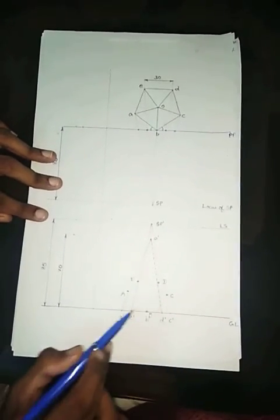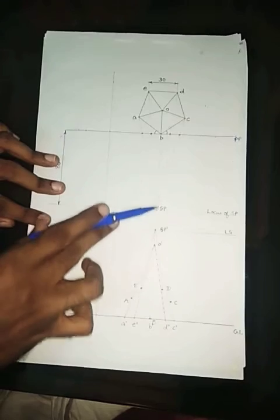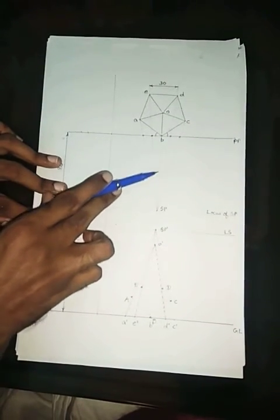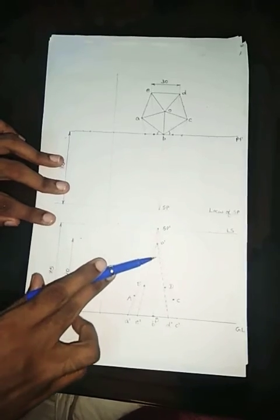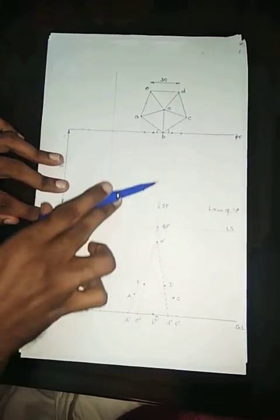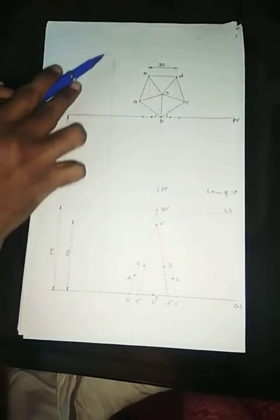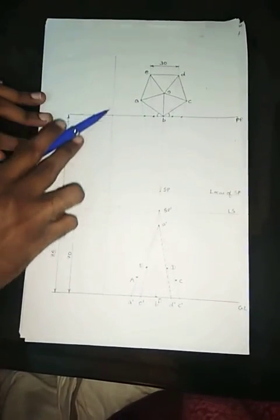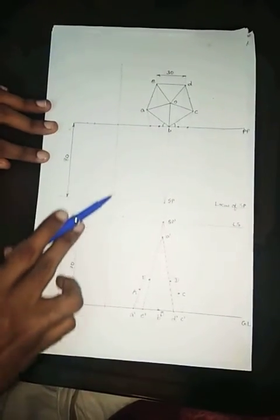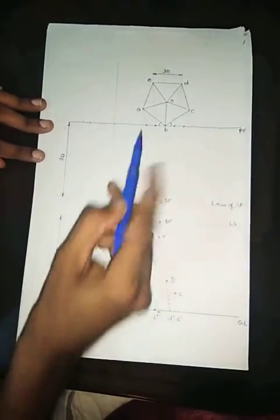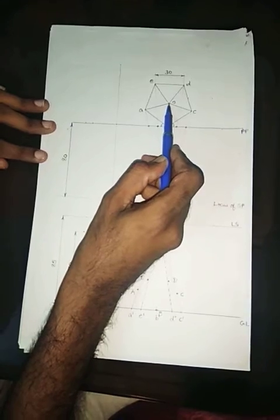Now the problem with axis is, if I am joining SP to O, it is lying on this line itself. And if I am projecting it downwards I won't get a single point on this line. So in this case what we have to do is we have to go for the end view. For that first what we have to do is you just draw a vertical line somewhere on the left side of the figure.